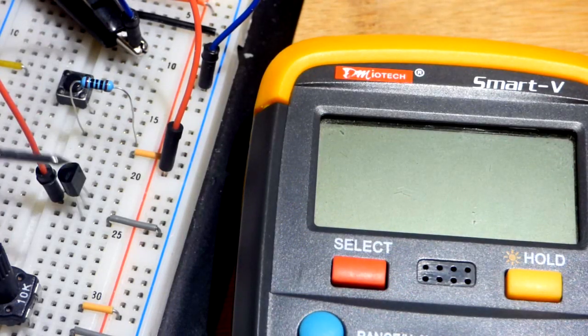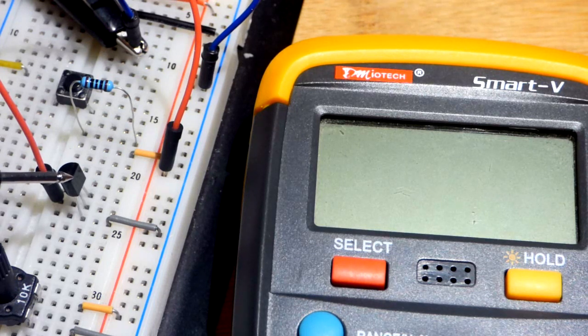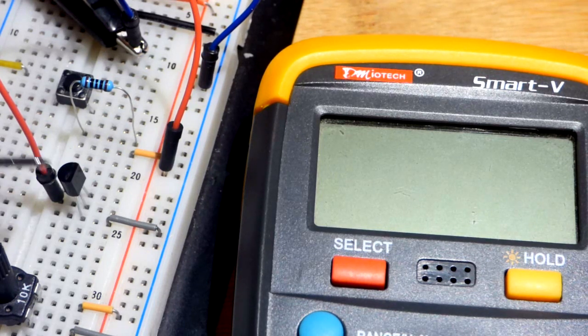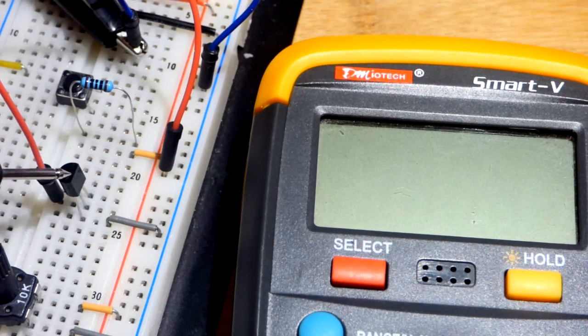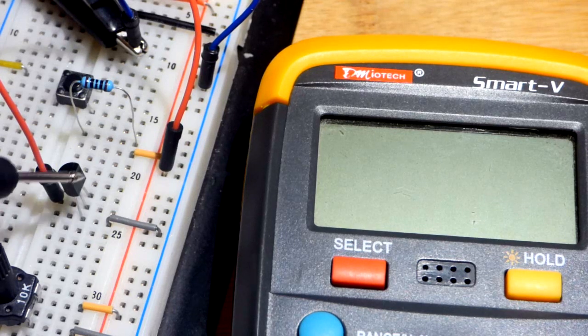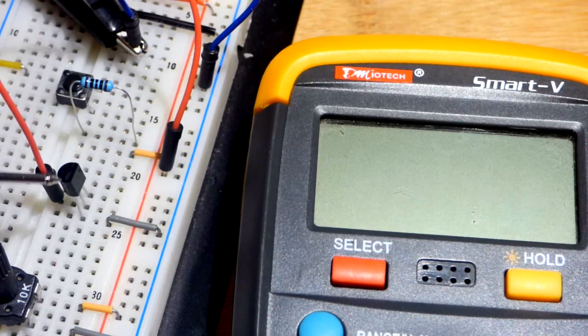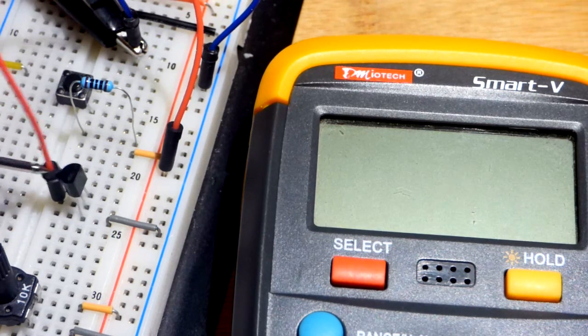The datasheet from ON Semiconductor for the 2N7000G N-Channel MOSFET component that we have here, I don't know if this is G or not, but it doesn't say G on the face of it. In any case, that's the datasheet I've come up with so far. It says that while the transistor is on,